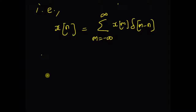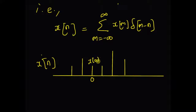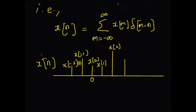Given an arbitrary signal with the following values, assume that this point is the origin. Then this value is x of zero, this one is x of one, x of two, and so on. And then on the negative side, we have x of minus one, x of minus two, and so on.